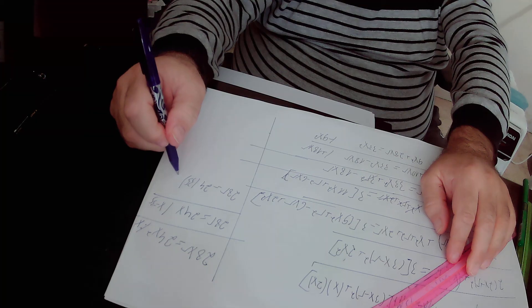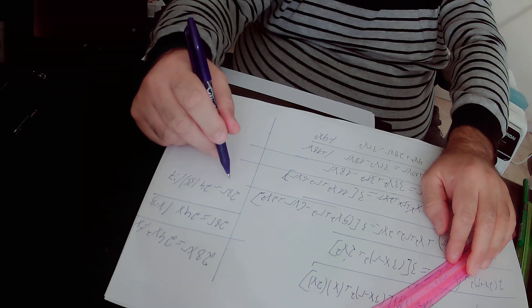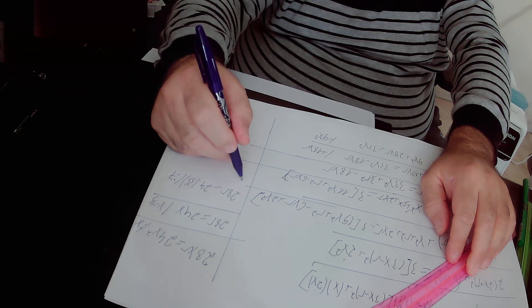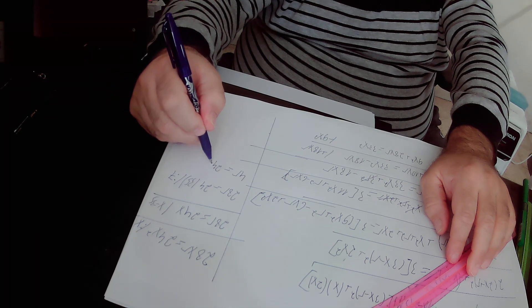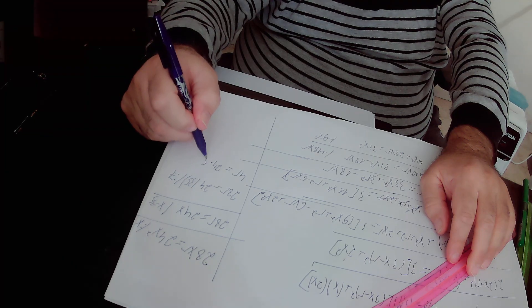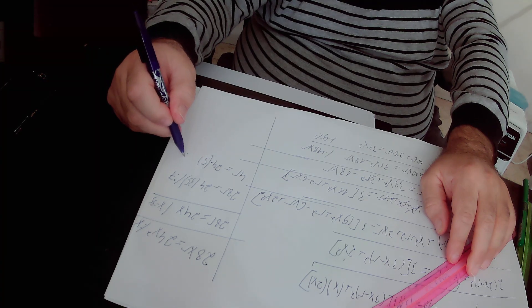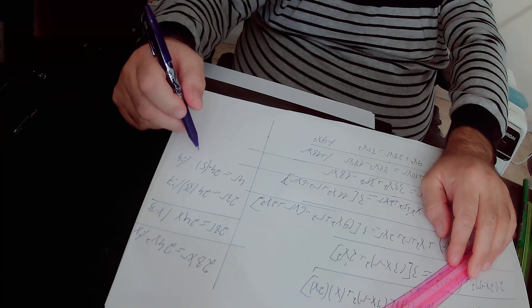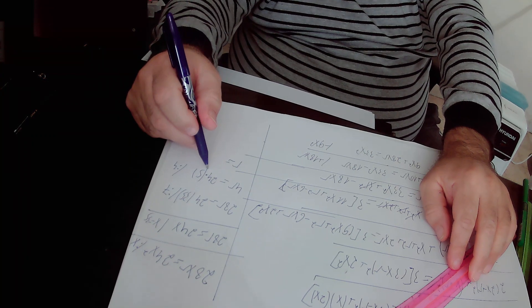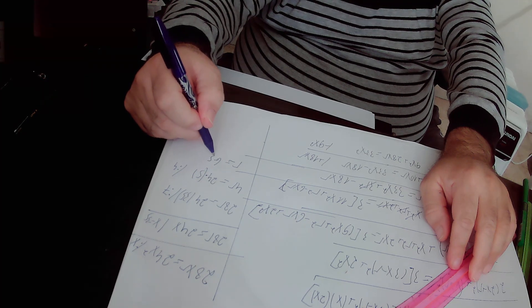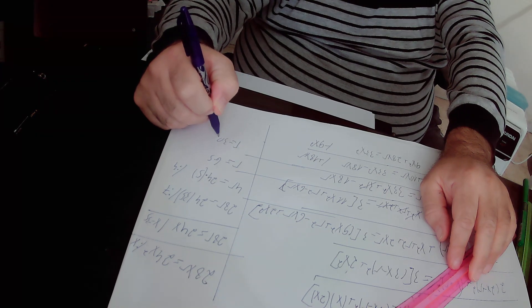Subtracting 9x squared from both sides gives 28xr equals 24x squared. Dividing by x: 28r equals 24x. Substituting x equals 35: 28r equals 24 times 35. Dividing by 7: 4r equals 24 times 5, which is 120. Dividing by 4: r equals 30 units. We found that the radius of the circle equals 30 units.